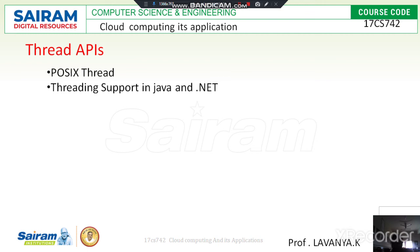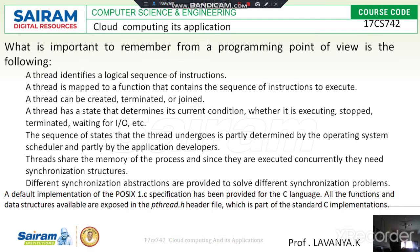The POSIX thread operations followed in programming are: first, the thread identifies a local sequence of instructions; then it maps that sequence of instructions to execute particular functions. After that, threads are created as well as terminated, and new threads are joined and allowed. The thread also determines the current condition — whether it is executing, stopped, terminated, or waiting — and based on that determination, all thread operations are followed.